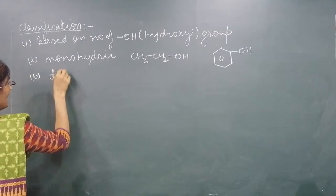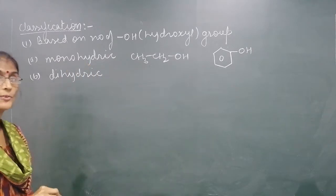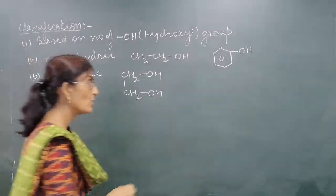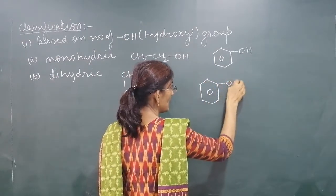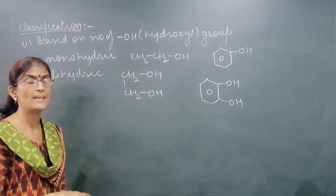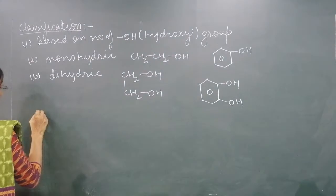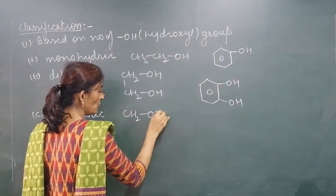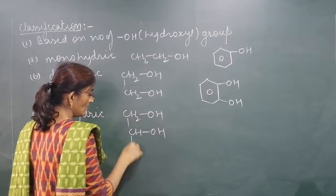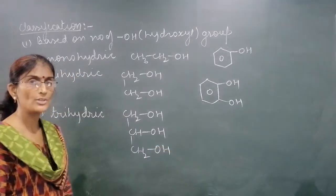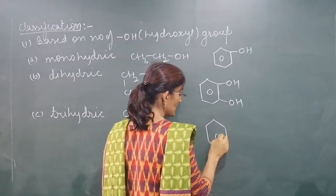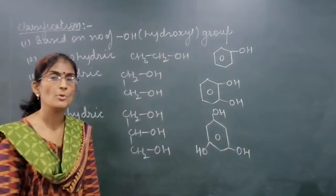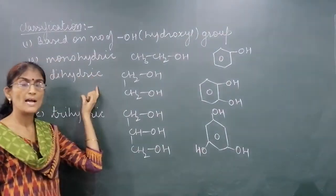The second is Dihydric. Dihydric means they consist of two OH groups. For example, CH2OH-CH2OH. This is known as Dihydric alcohol. If two OH groups are attached to a phenyl ring, it is called Dihydric phenol. The third is Trihydric, meaning there are three OH groups — for example, Glycerol has CH2OH-CHOH-CH2OH.